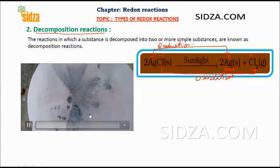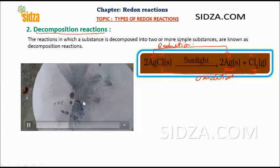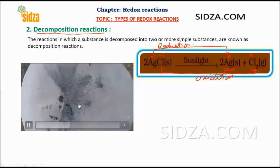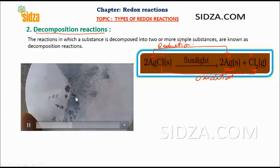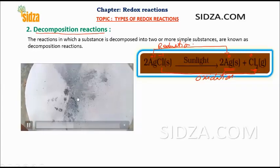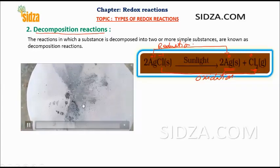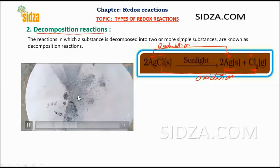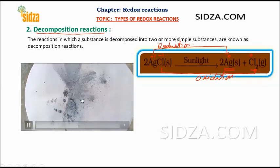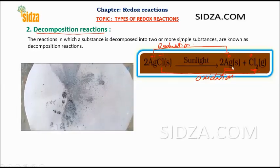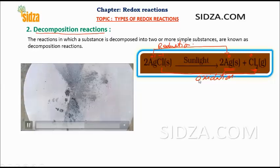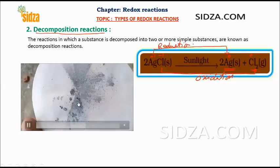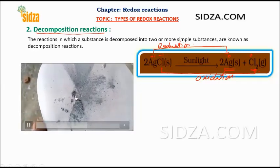Once I go outside you can see the color change — it changed from white to metallic silver. This is due to the decomposition of the silver chloride. The chlorine goes into the atmosphere and the metallic silver remains on the filter paper.